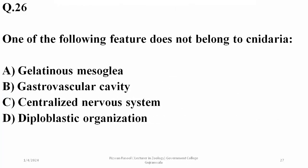Question 26: which of the following features does not belong to Cnidaria? Cnidarians possess gelatinous mesoglea, a gastrovascular cavity, and diploblastic organization, but possession of a centralized nervous system was first observed in phylum Platyhelminthes — so C is the right answer.